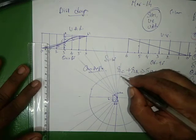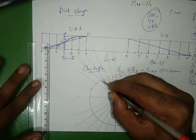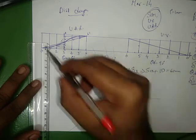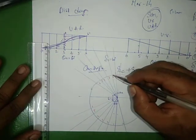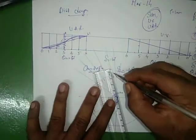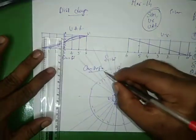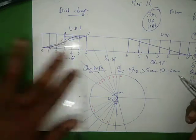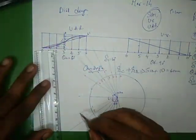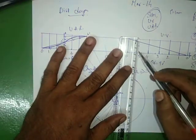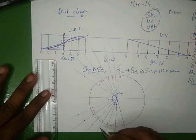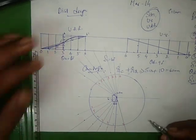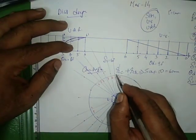Here we have points marked: 0, 1, 2, 3, 4, 5, 6, then 6, 5, 4, 3, 2, 1, 0. We mark 1 dash, 2 dash, 3 dash, 4 dash, 5 dash, 6 dash for the rise, and similarly 5, 4, 3, 2, 1 for the return. These correspond to the displacement diagram values.